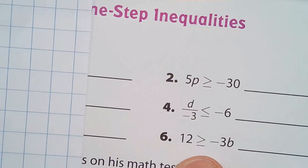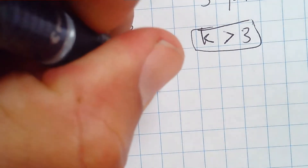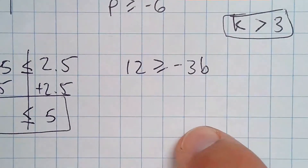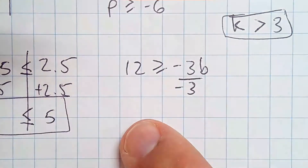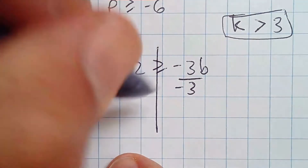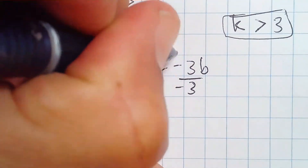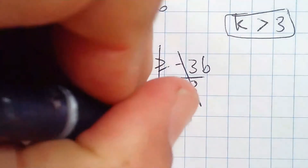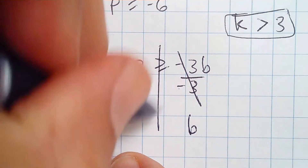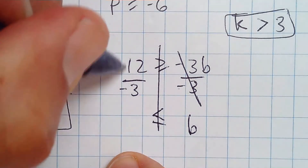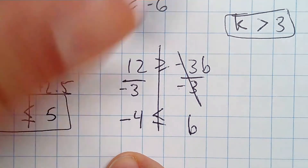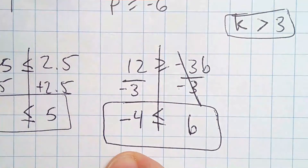Number 6: 12 is greater than or equal to negative 3b. That's multiplication, so I'm going to divide by negative 3 on both sides. These actions cancel each other out, leaving b. I divided by a negative, so I have to switch the direction of the inequality. And 12 divided by negative 3 is negative 4.